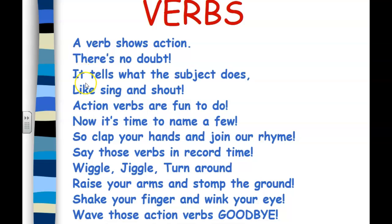We had a lot of action in there. The verb tells what the subject does — we have the who part, the subject, and the do part, the predicate. The predicate has the verb in it, the action. We have: sing, shout, clap, join — and then we had the ones where you could participate: wiggle, jiggle, turn around, raise, stomp, shake, wink, wave. All of those are action verbs.